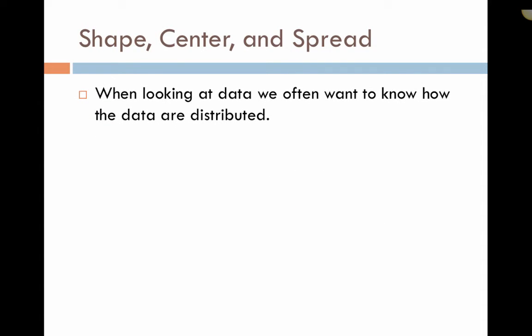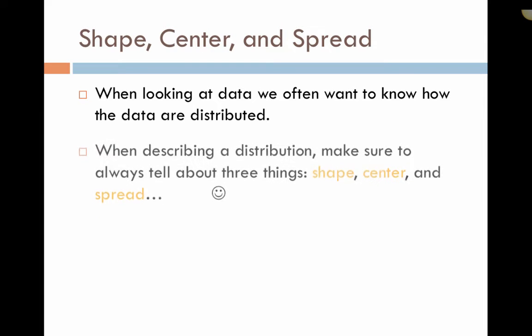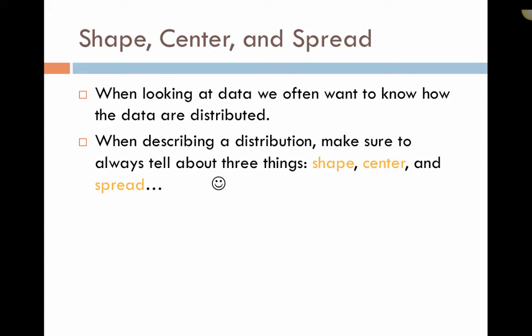Once we have the display, we often want to know how the data are distributed. When we're looking at the distribution, we always want to tell about three things: shape, center, and spread.